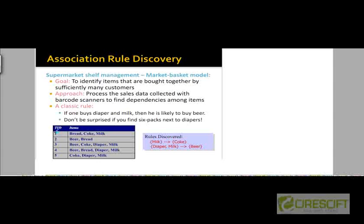Here is an example of such data. There are five transactions recorded in this table, where TID stands for transaction ID. In the first transaction, the customer bought bread, coke, and milk. In the second transaction, the customer bought beer and bread — these could be different customers. Each transaction consists of a set of items, which means there are no duplicate items. So even if a customer buys three loaves of bread, we just record it as a single item called bread.